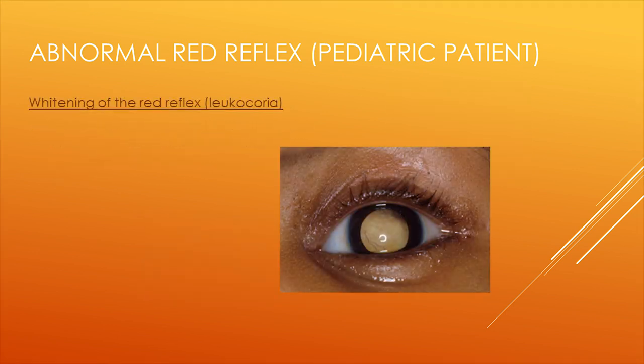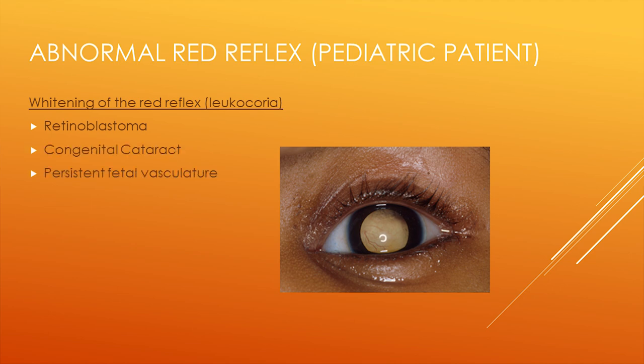Leukocoria is a term for whitening of the red reflex. The most common conditions causing this whitening are retinoblastoma — a serious tumor in the back of the eye — cataracts, persistent fetal vasculature, or Coates disease. Coates disease is characterized by abnormal blood vessel development in the retina and can threaten vision if left untreated.